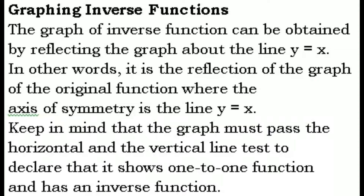The reflection of the graph and the inverse function uses the line y equals x. Later on we'll see where that line is. Keep in mind that the graph must pass the horizontal and the vertical line test to declare that it shows a one-to-one function and has an inverse function. So to know if something is a one-to-one function, the graph must pass both the vertical line test and the horizontal line test, where each line intersects the graph at exactly one point.